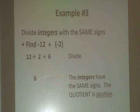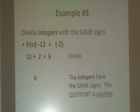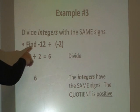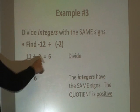Our next example, please note, is dividing integers with the same sign. We'll find negative 12 divided by negative 2. And again, we start with simple division. 12 divided by 2 we know is 6.